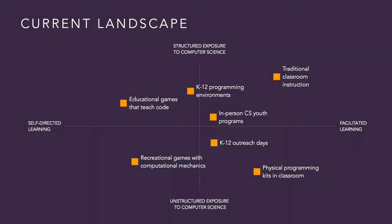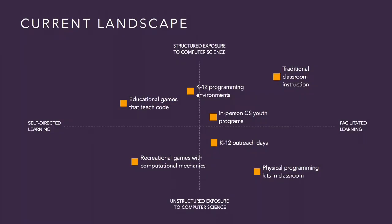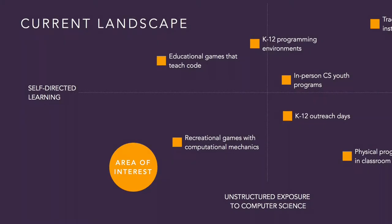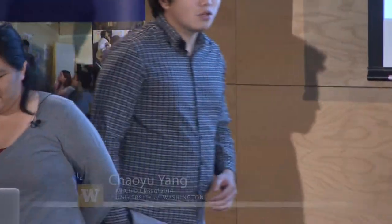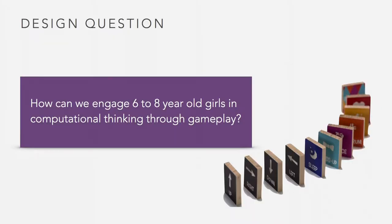After doing some competitive analysis and secondary research, we mapped out all the mechanisms that expose girls to computational thinking and computer science. Some provide facilitated structured learning, such as traditional classroom instruction. Others provide unstructured exposure, such as the robotics kits you see in some kindergarten classrooms. Because children learn extensively through unstructured and self-directed play, we're interested in exposing girls to computer science through social and casual gameplay. The design question we responded to was: how can we engage six to eight-year-old girls in computational thinking through gameplay?